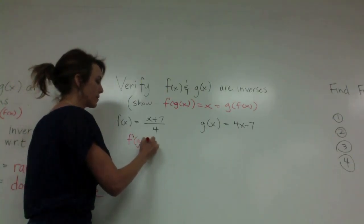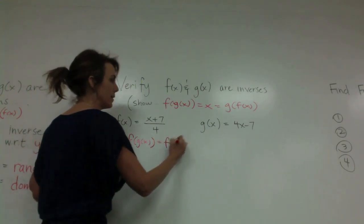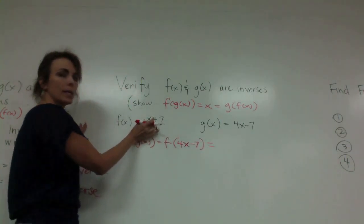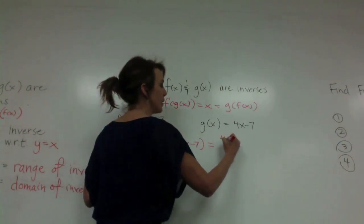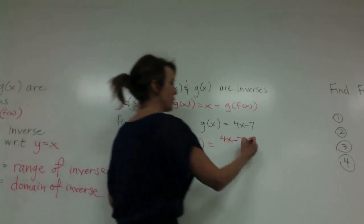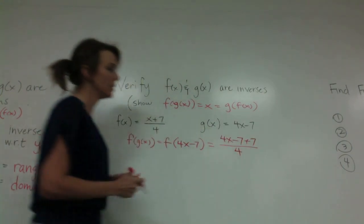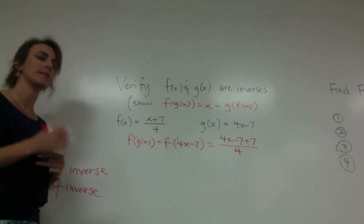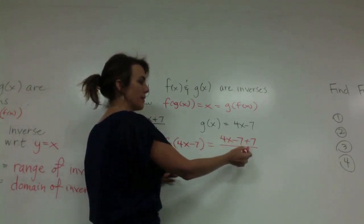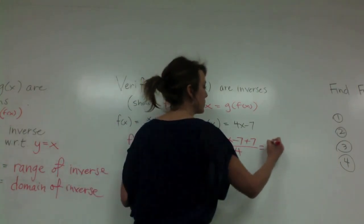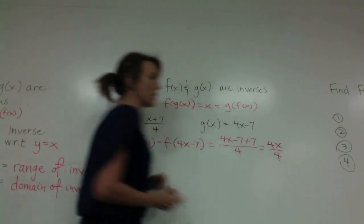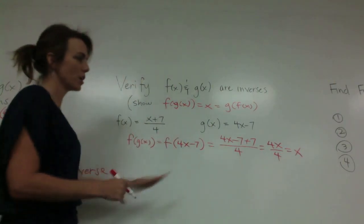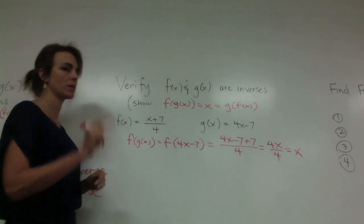f(g(x)) would mean taking f(4x-7). So I'm taking 4x-7 and substituting it in, so we would have (4x-7+7)/4. We want to show that this is indeed just x. We're going to simplify it a step at a time. So 4x-7+7, that -7 and +7 cancel out, so this equals 4x/4. And we know that 4x divided by 4 is indeed x. You need to show the progression of your simplification.